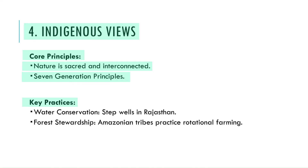Examples of indigenous practices include water conservation — step wells in Rajasthan are a traditional way to store rainwater and provide a reliable water source. Another example is forest stewardship — Amazonian tribes practice rotational farming to maintain soil health and biodiversity, using small plots of land and allowing the forest to regenerate naturally. Incorporating indigenous knowledge into modern sustainability frameworks can enhance their effectiveness and cultural relevance.